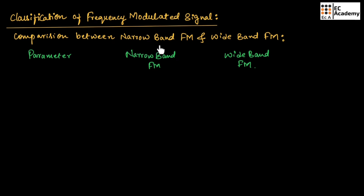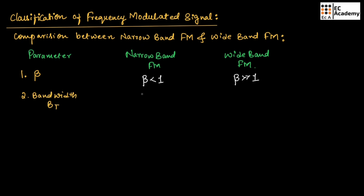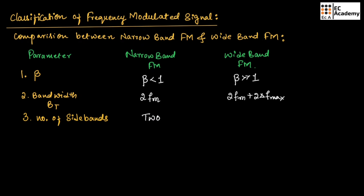Now let us compare narrow band FM and wide band FM by considering different parameters. For modulation index beta: in narrow band FM it is less than 1, and in wide band FM it is greater than 1. For bandwidth: narrow band FM uses the formula 2Fm, while wide band FM uses 2Fm plus 2ΔF maximum. For number of side bands: narrow band FM has two side bands, while wide band FM has infinite side bands.